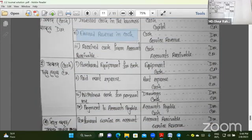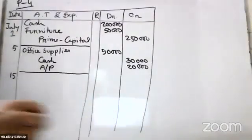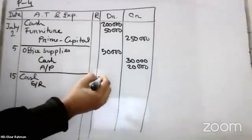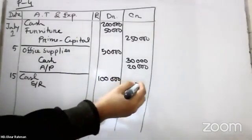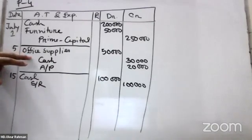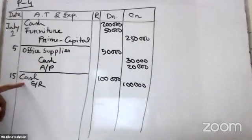Cash debit with service revenue credit. This is the service revenue entry. Cash debit, service revenue credit. The shortcut rule: cash debit, revenue credit.